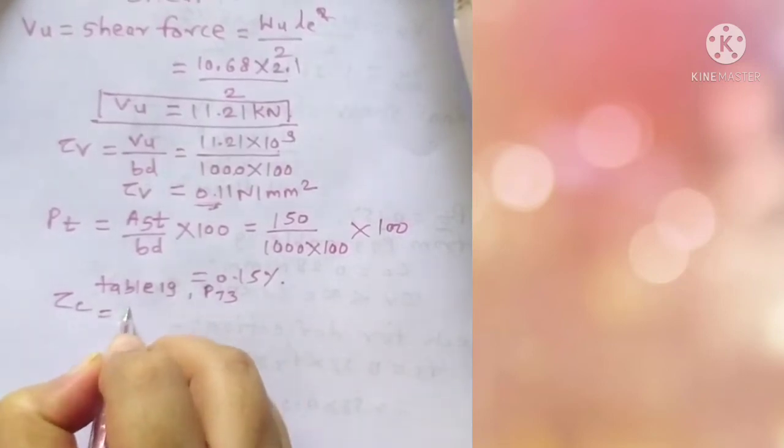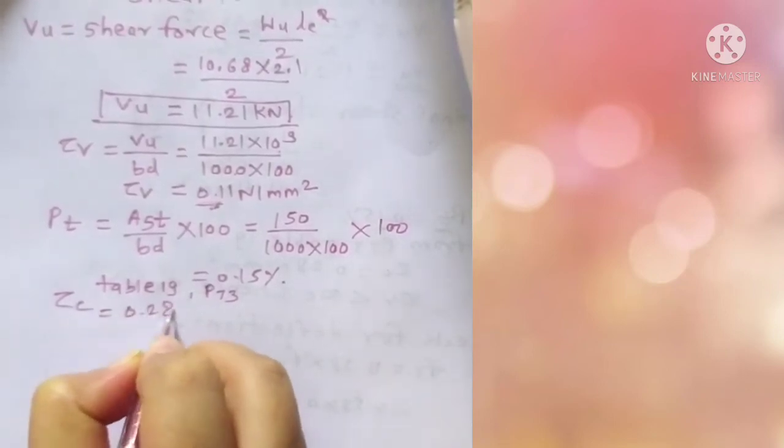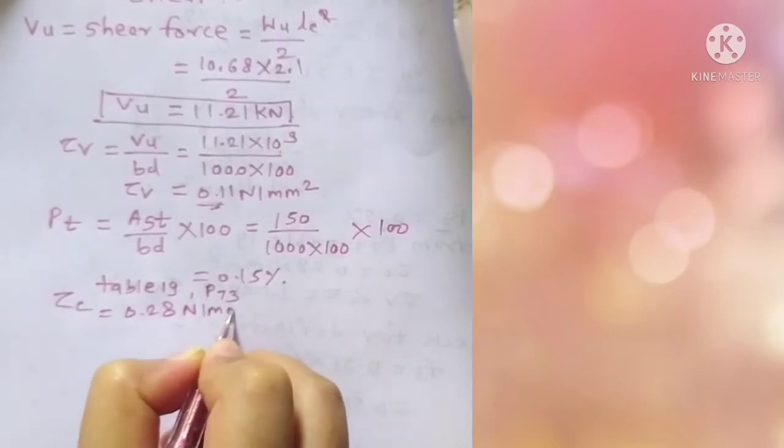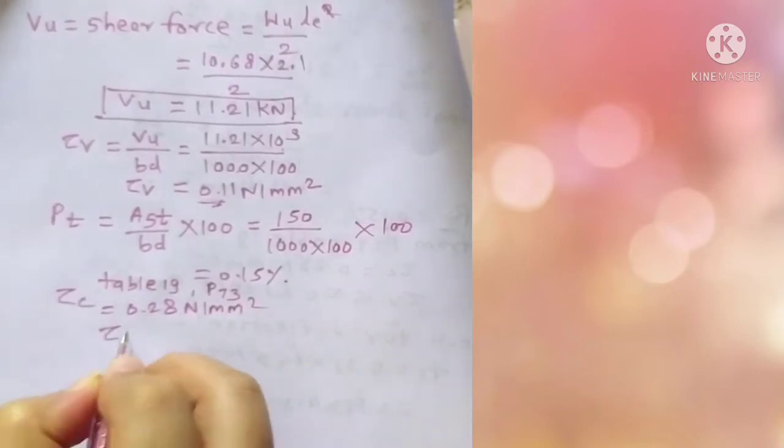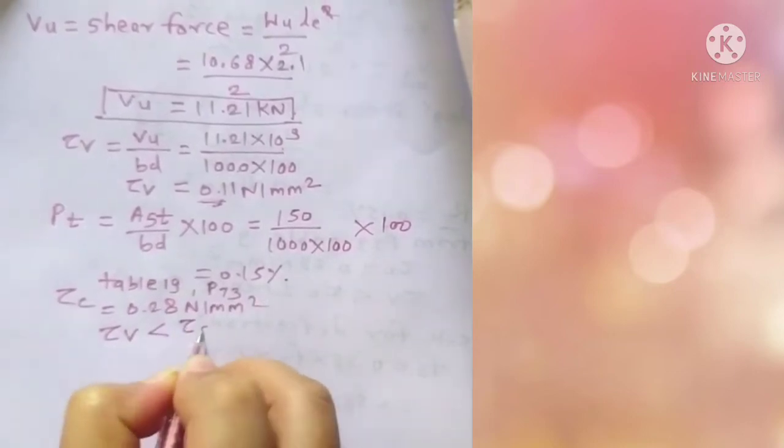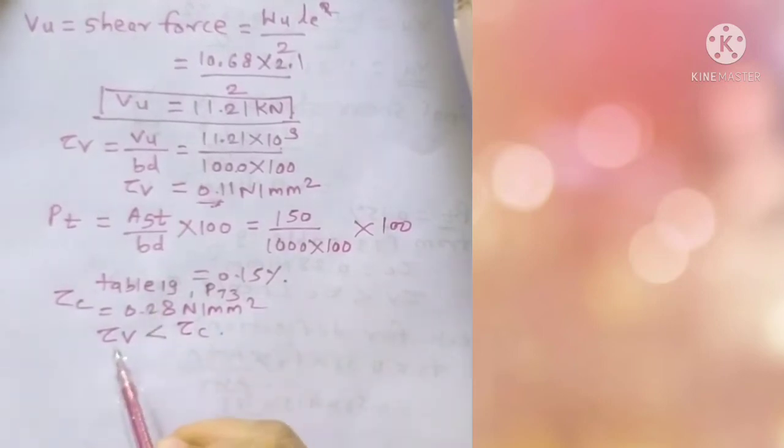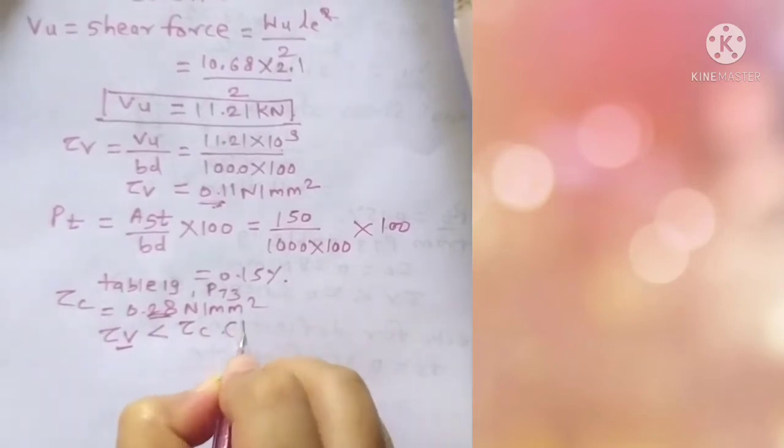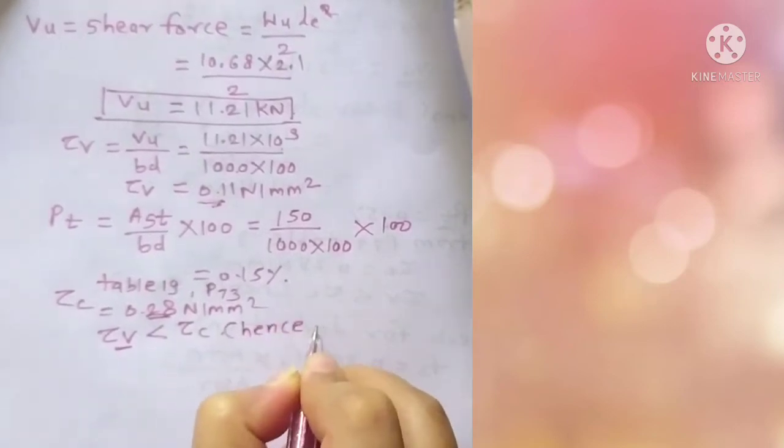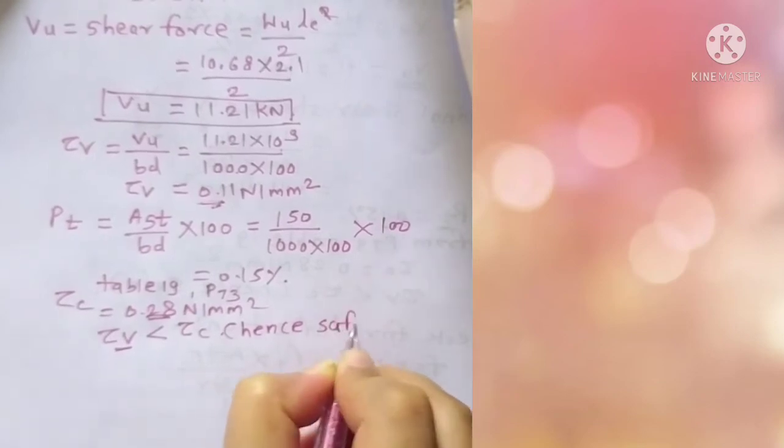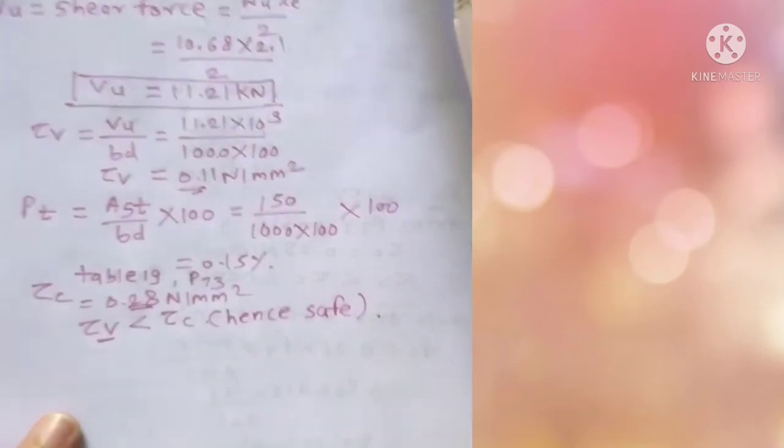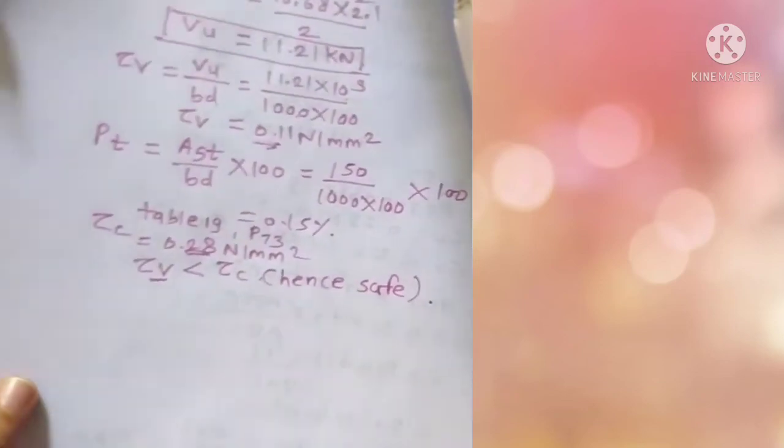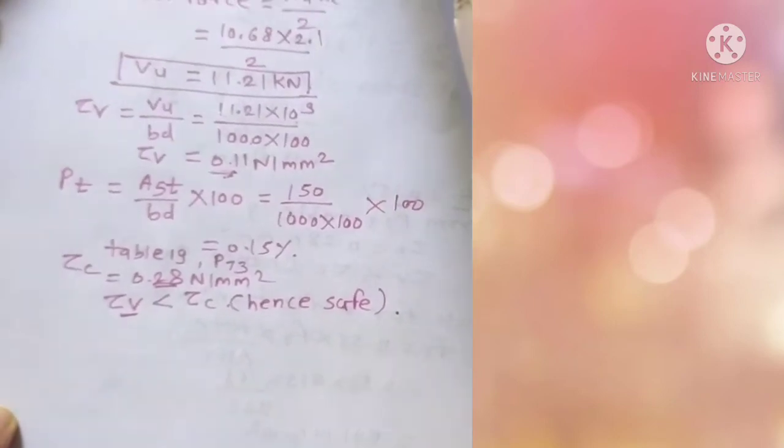For 0.15 percentage of steel, the Tau C which is given in table 19, page number 73 of IS code, I am going to take the value as 0.28 newton per mm square, and Tau V is however less than Tau C. The value of Tau V was 0.11, the value of Tau C is 0.28, and hence you are safe in shear.